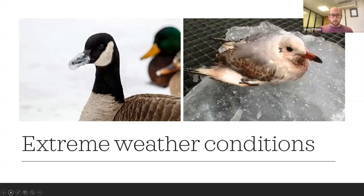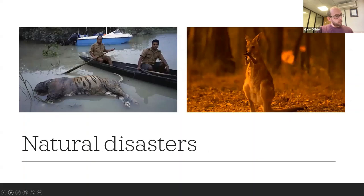Another common cause is extreme weather conditions. Animals don't have the shelters, clothing, or refuges that human beings have, so they suffer a great deal from extreme cold, extreme heat, and droughts. They also suffer a lot from natural disasters. We have a picture of a flood in a nature reserve in India that killed quite a lot of animals, and also pictures of the Australian bushfires from a couple of years ago. The numbers of animals killed in those fires were shocking — something upwards of one billion animals.